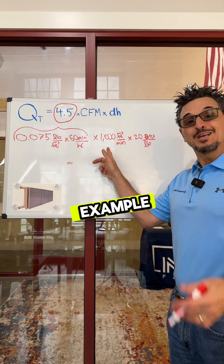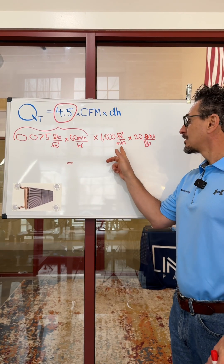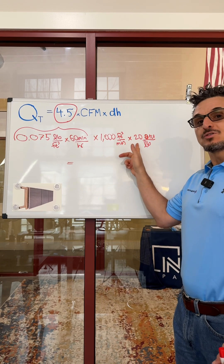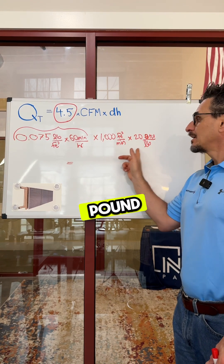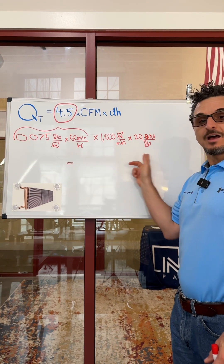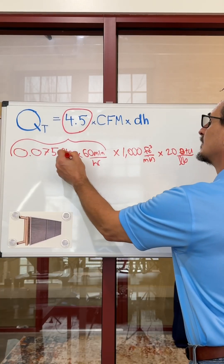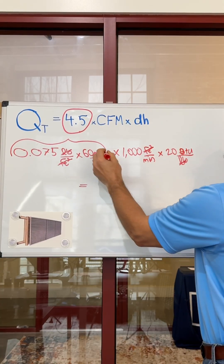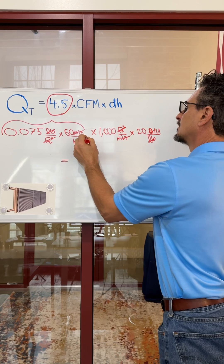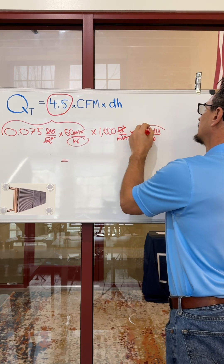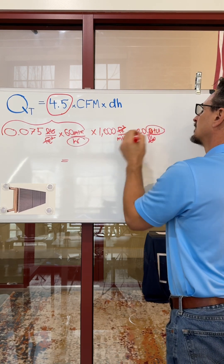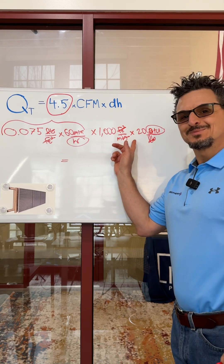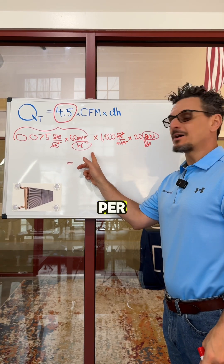For example, let's say 1,000 cubic feet per minute, with a delta H of 20 BTUs per pound, and let's see how this works out. You can see you're left with BTUs per hour.